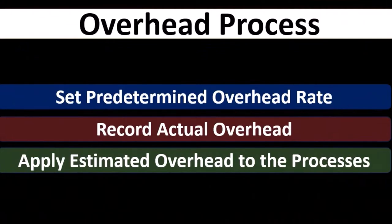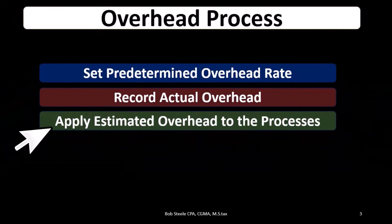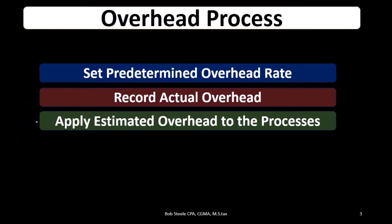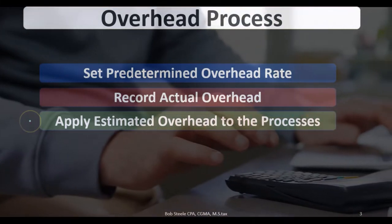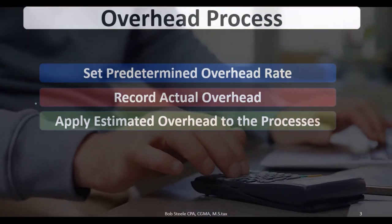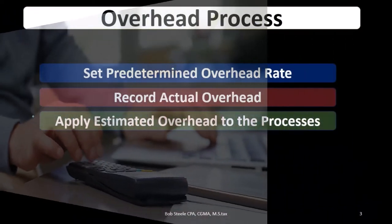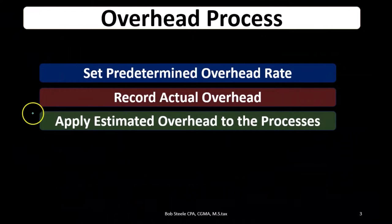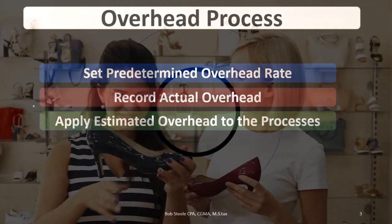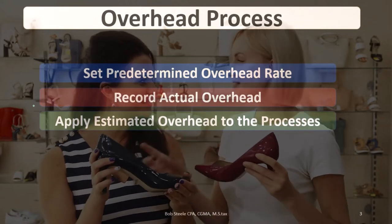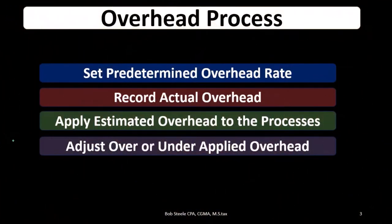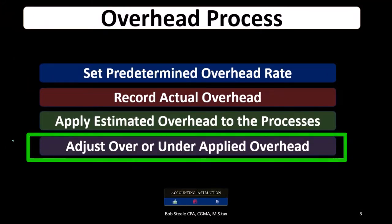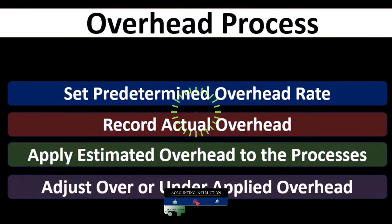Then we apply the estimated overhead to the process using some type of rate. The actual overhead will typically differ from the estimated overhead, partly due to timing — we might use the estimate first and therefore won't have an exact matchup between actual overhead incurred and estimated overhead. This means we'll need to adjust the over or under applied overhead at the end of the period.